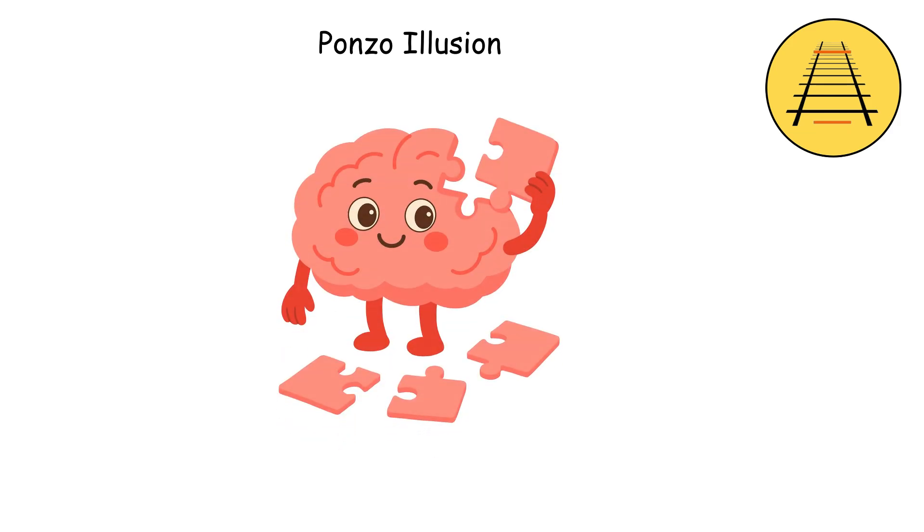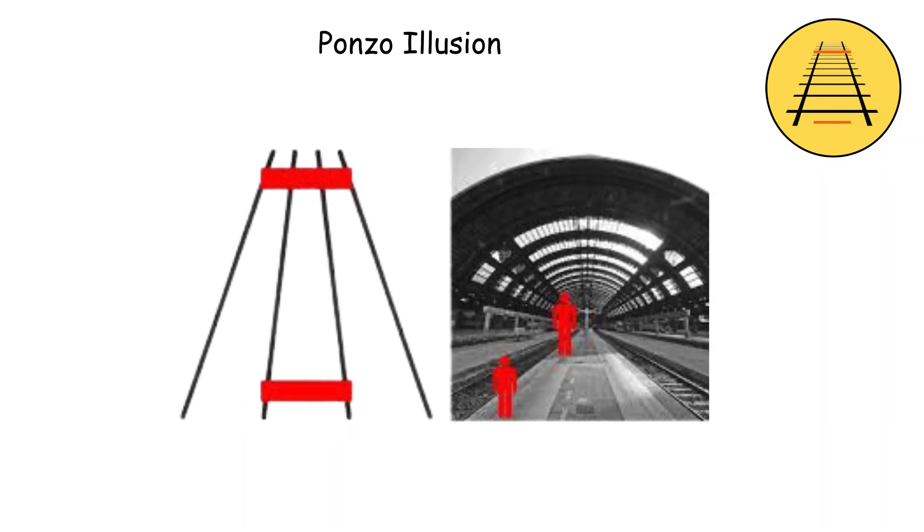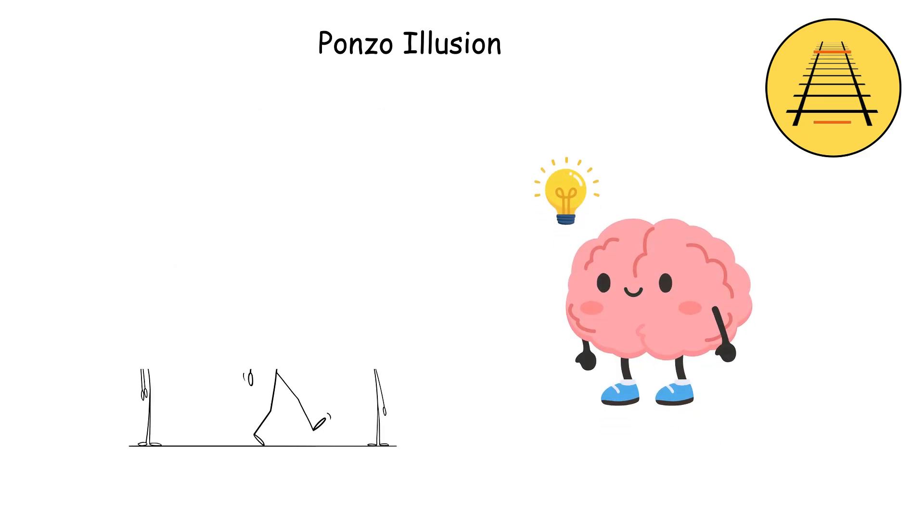Your brain assumes the line that's higher up and between the narrower part of the converging lines must be further away. Since it looks further away but takes up the same amount of visual space, your brain concludes it must be bigger.